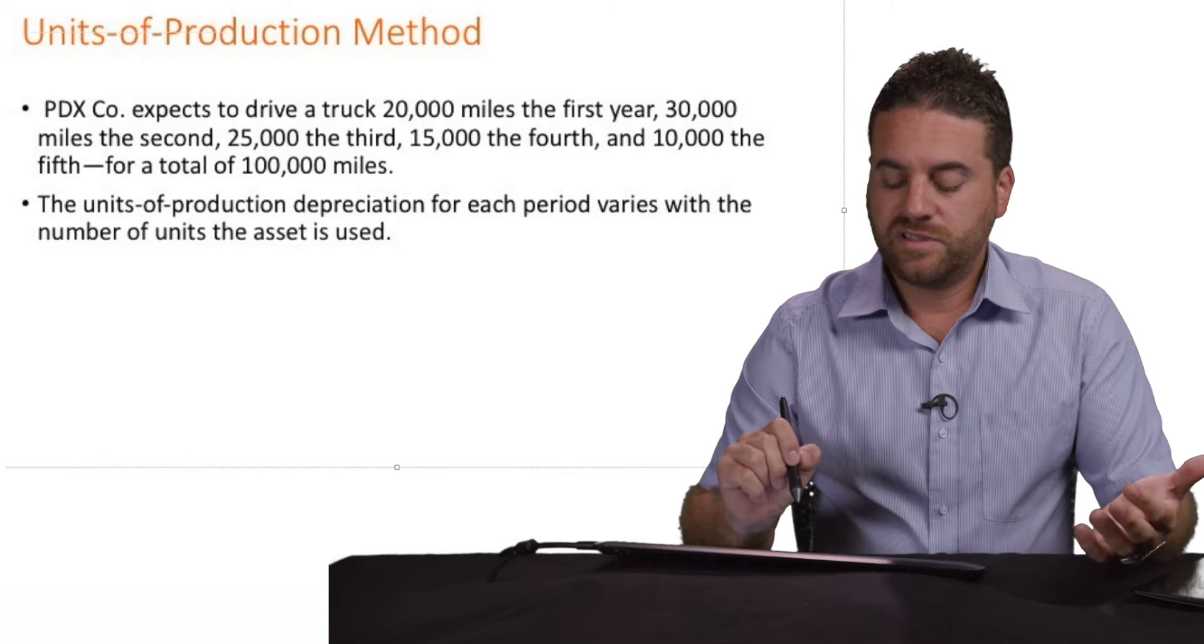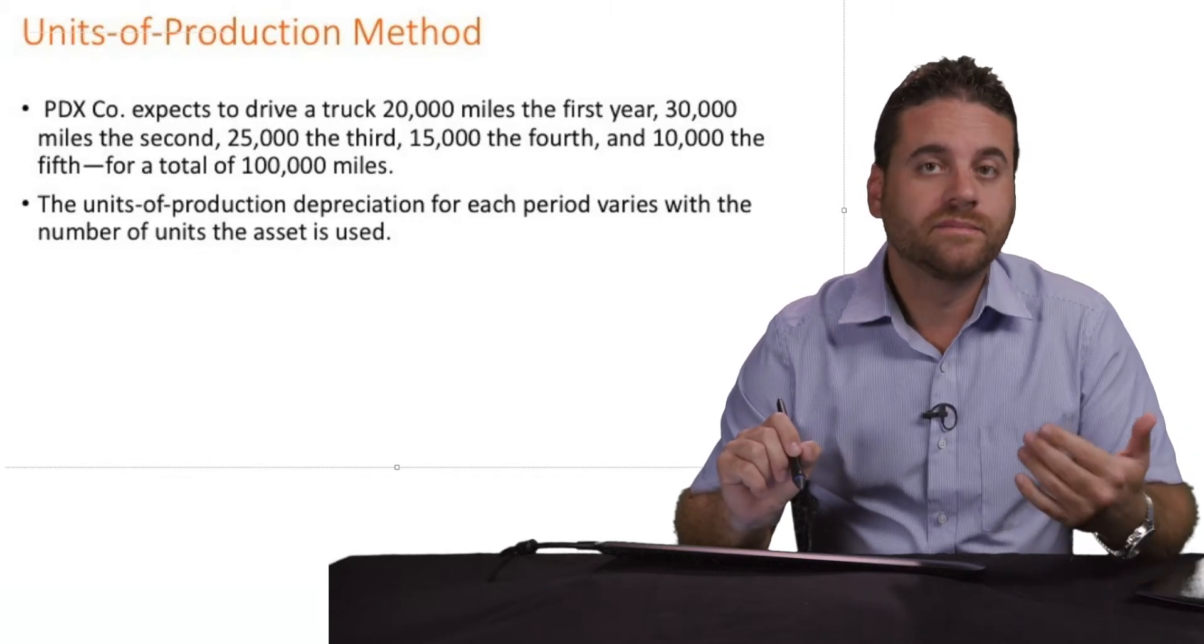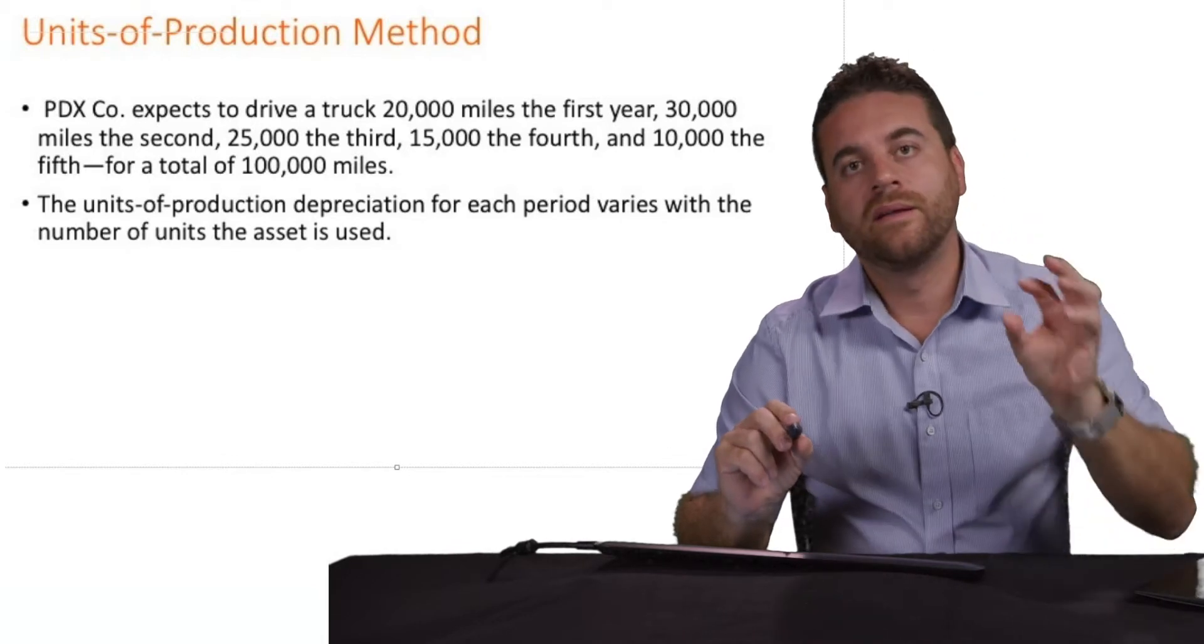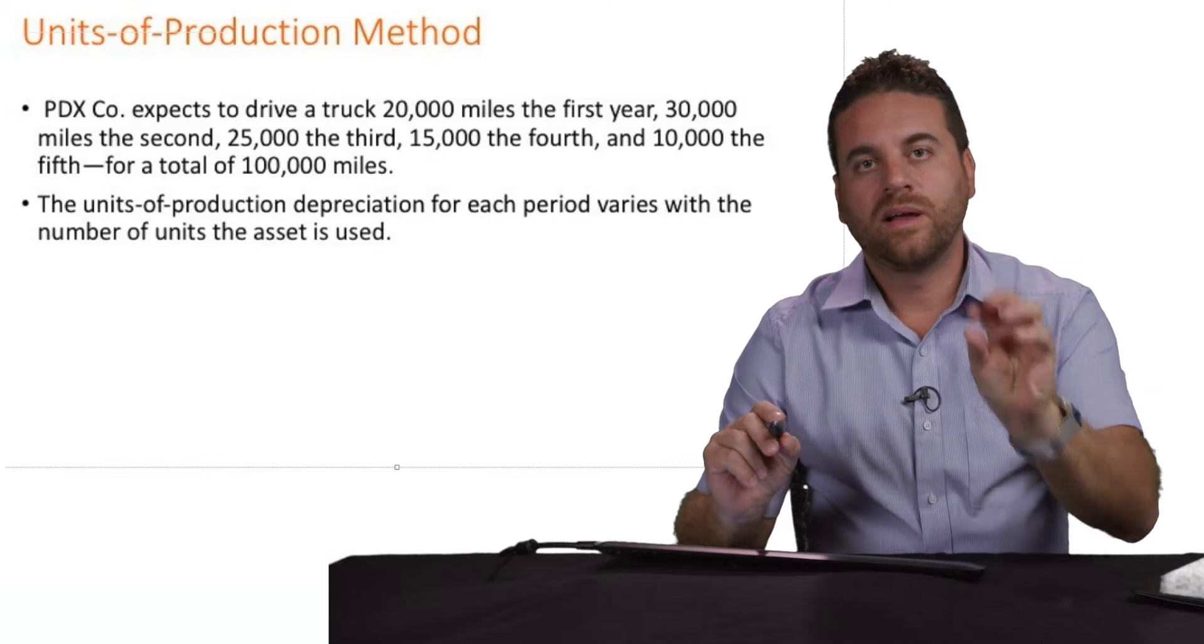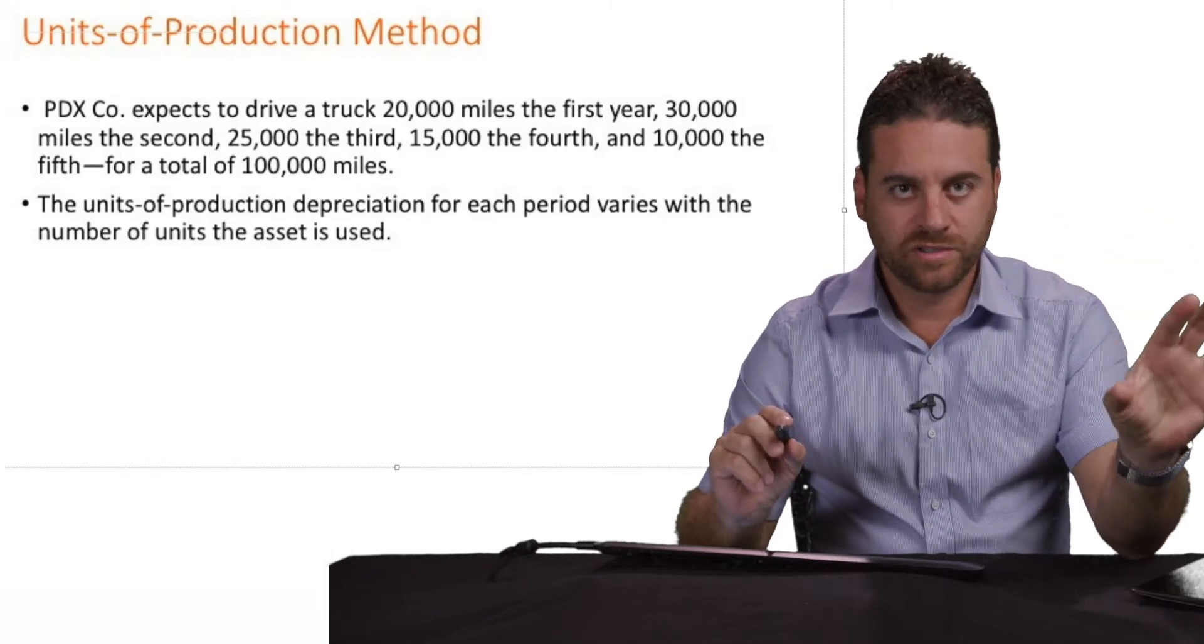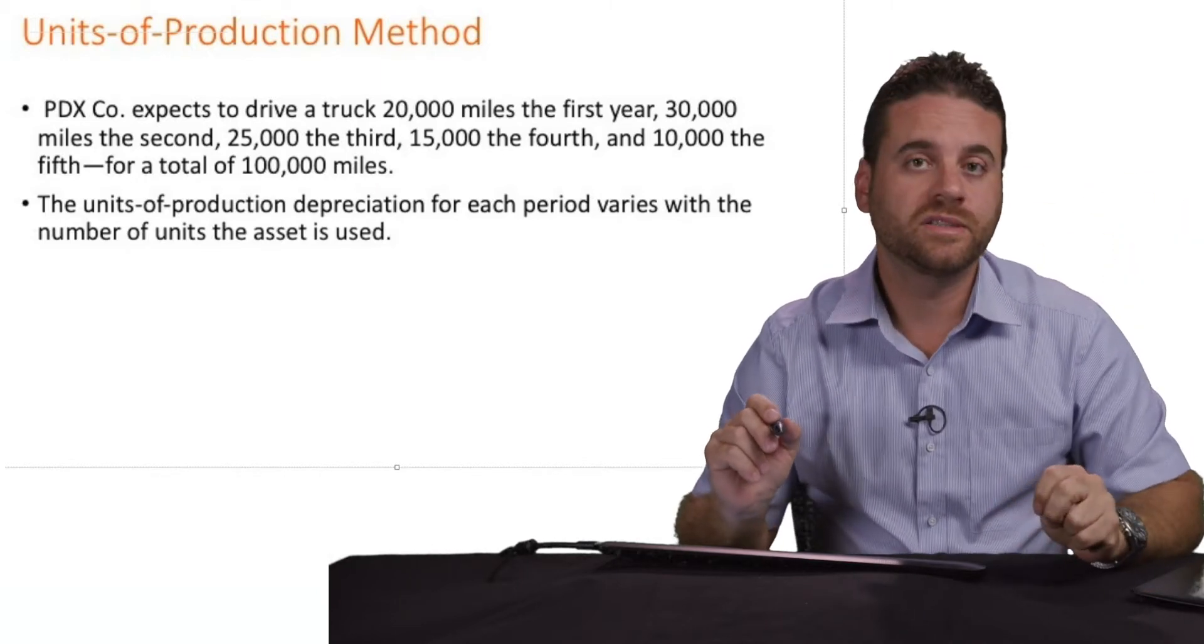So the first step is to calculate what is the cost per mile. That's the first step. And then the cost per mile, every year we're going to multiply it by the number of miles we used it in that year. That gives me the total depreciation for the year.